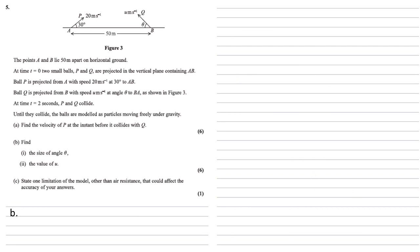For part B, we need to find the size of angle theta and the value of U. So let's start by resolving this horizontally. We know that the horizontal velocity of P is 20 cos 30 and the horizontal velocity of Q is U cos theta in the opposite direction. After two seconds, we know they collide. So in two seconds between them, they must have travelled the 50 metres that they were originally apart. So if we add the two velocities together, times by 2, this should come to the distance of 50. Simplifying this is 20 root 3 plus 2U cos theta equals 50. Subtracting 20 root 3 and dividing by 2 gives us that U cos theta equals 25 minus 10 root 3.